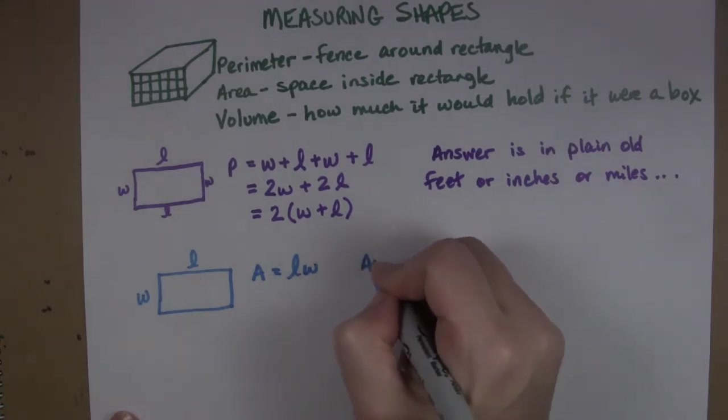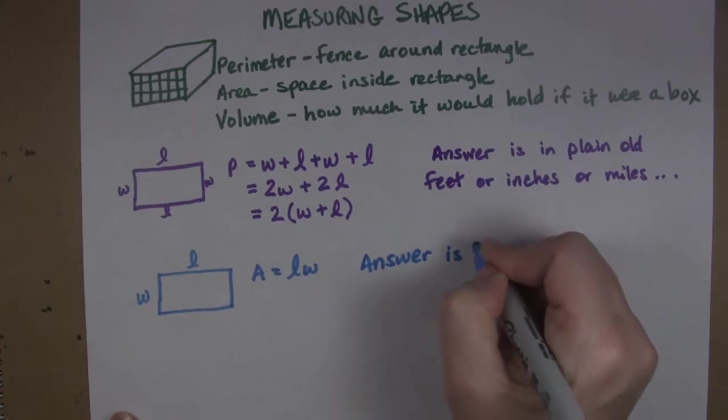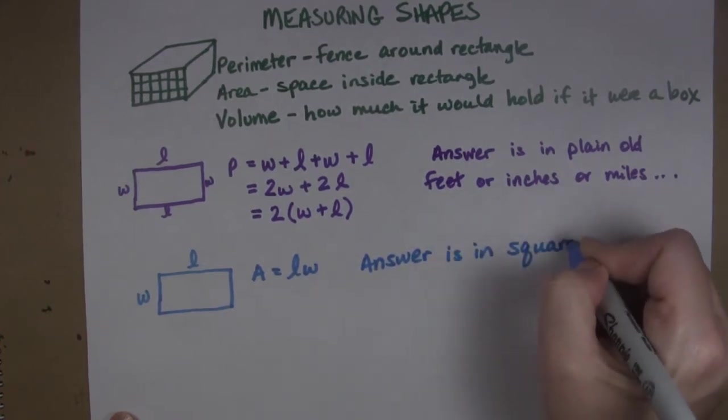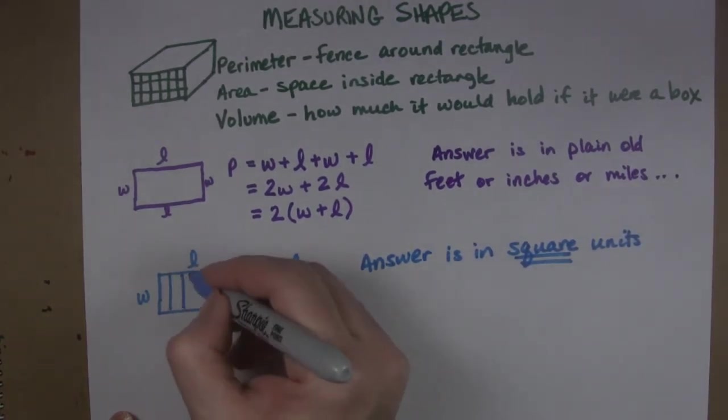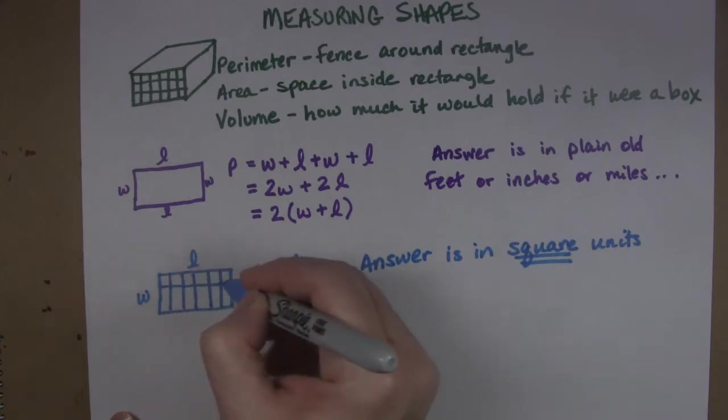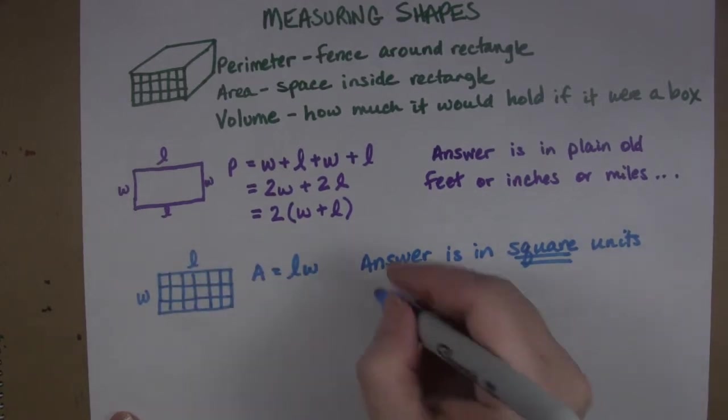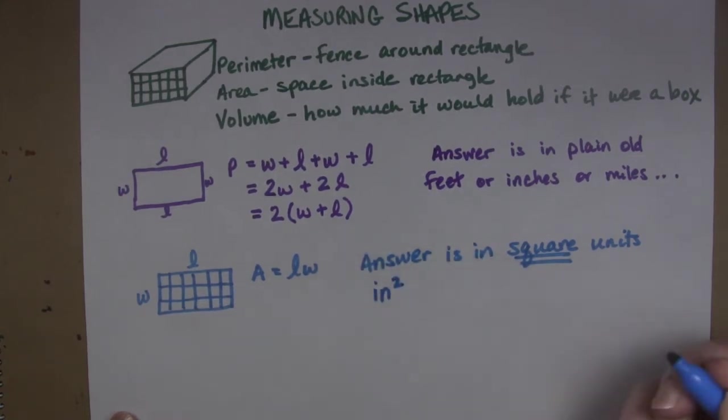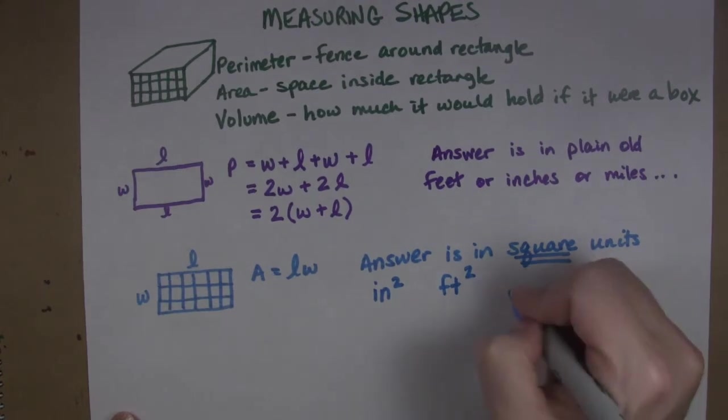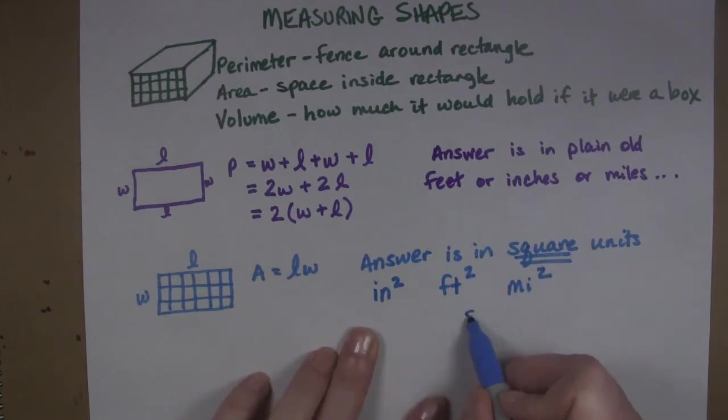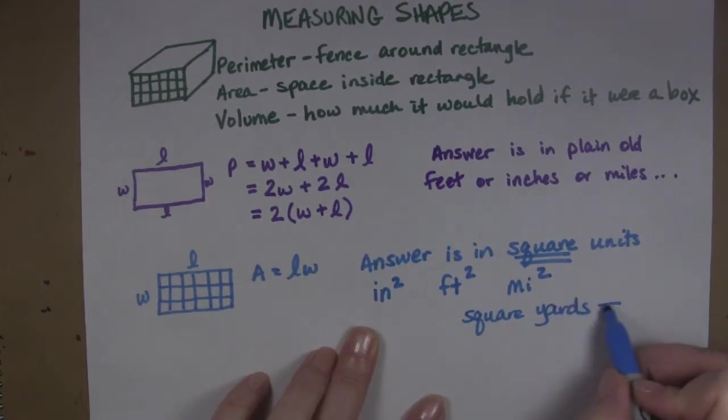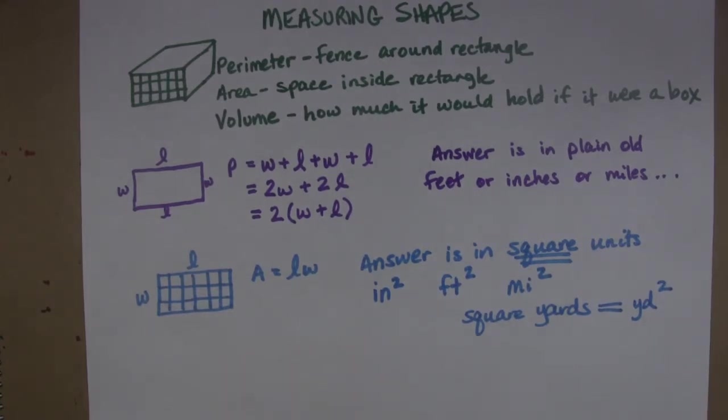Here's what's interesting though is that the answer you get is in square units. Square units because we're making a bunch of squares in order to make this measurement. So our answer is going to be in square inches or square feet or square miles. Notice that sometimes we write out like square yards, but if we were going to abbreviate that we would say yards squared like that. That all means the same thing.